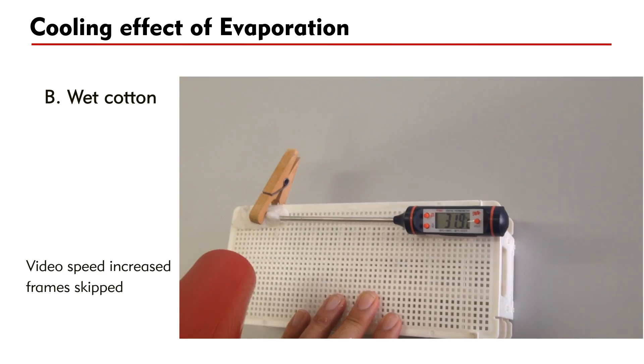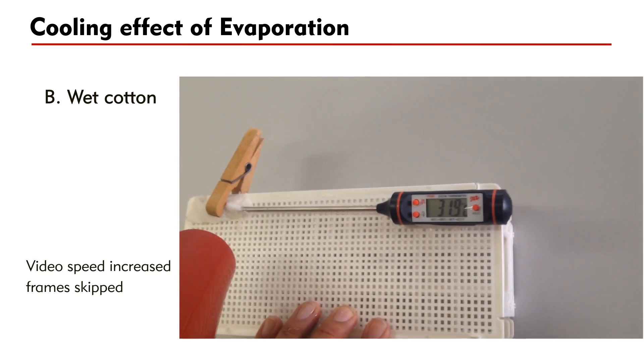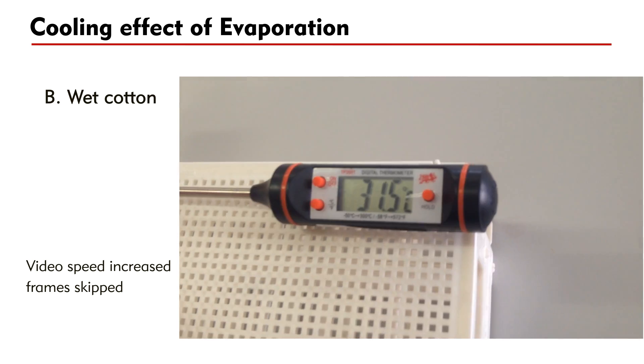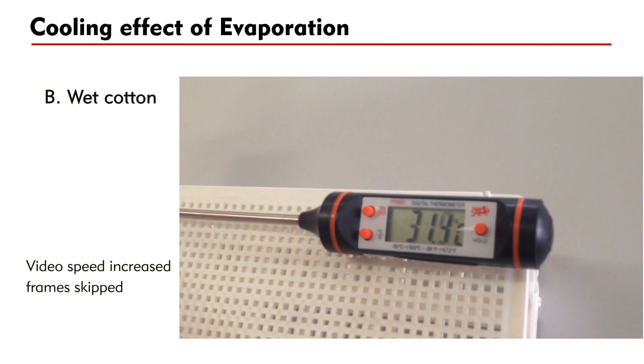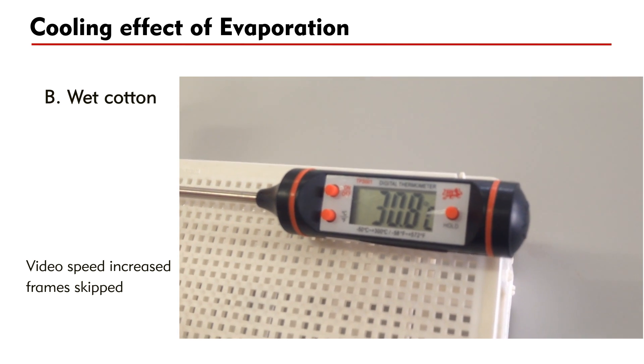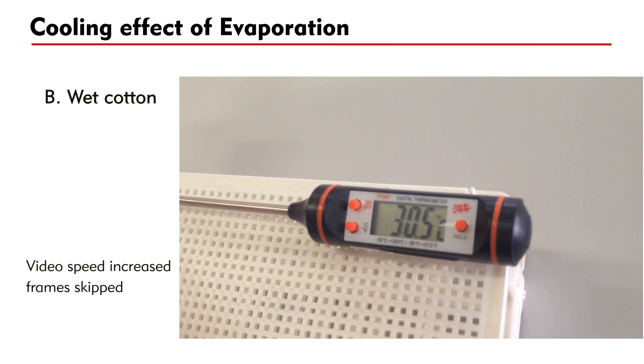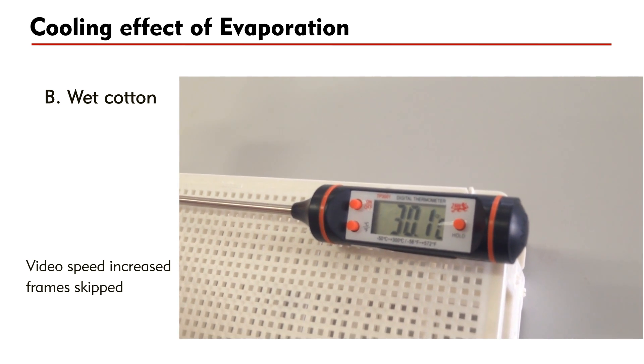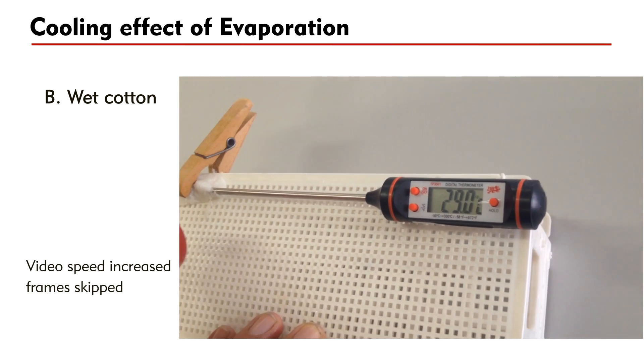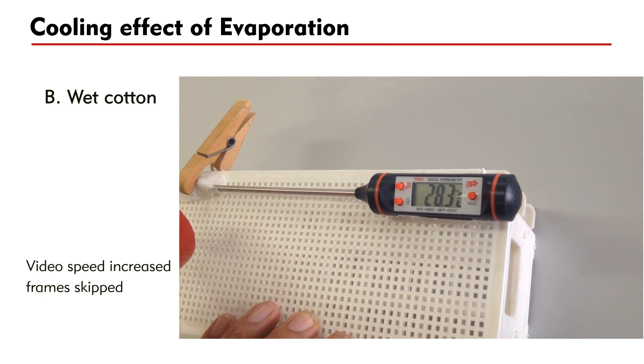However, when a piece of wet cotton is used, the temperature falls significantly. The wind accelerates evaporation and this produces observable cooling effect.